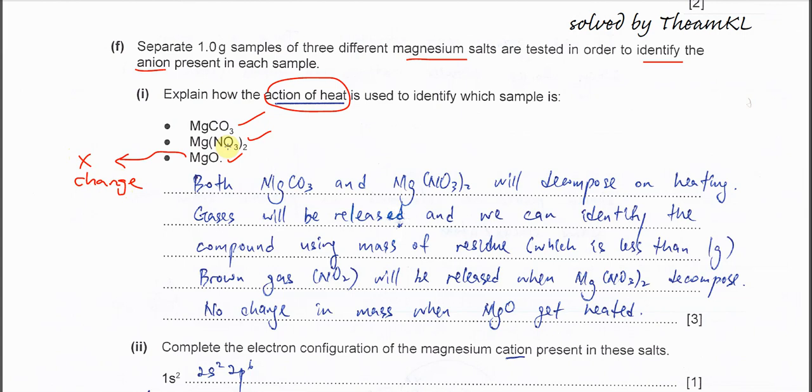We know that the carbonate or Group 2 carbonate and nitrate, they will decompose. The first thing you will see is the magnesium nitrate, after it decomposes, will form NO2 gas. Magnesium carbonate, after it decomposes, will form CO2. Therefore here, when you try to heat the first two compounds, both of these carbonate and nitrate compounds will decompose. Then the gas that is released, we can identify the compound.